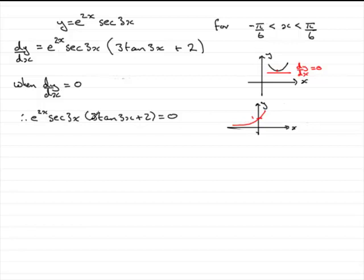Now, what about sec(3x)? Well, the graph of sec(3x) is going to look something like this. It's going to go through 1, and it's going to be a kind of U shape like this. So, you can see that this never equals 0. So, e^(2x) can't equal 0, sec(3x) can't equal 0. Well, something's got to equal 0 for this to come to 0. So, it's got to be this factor here.